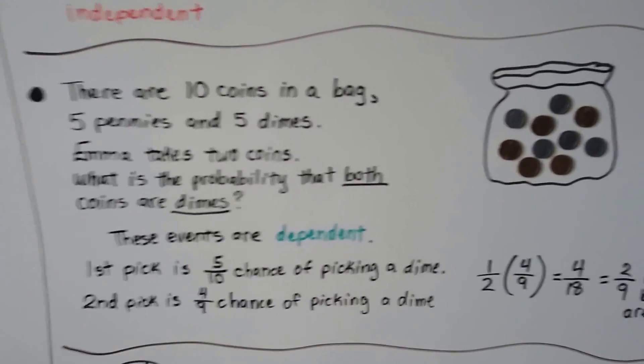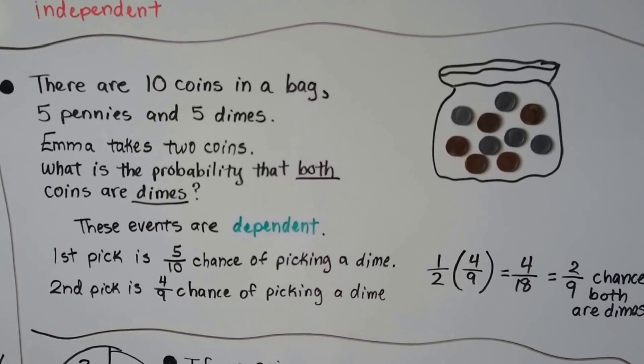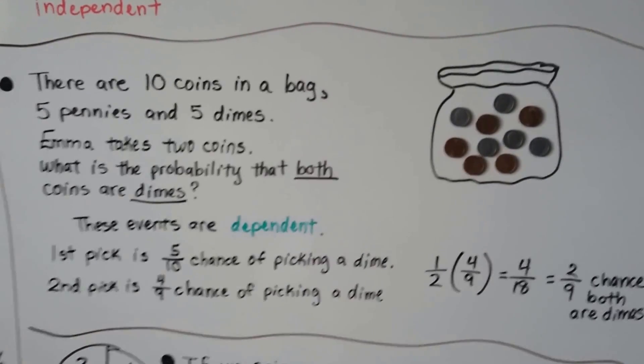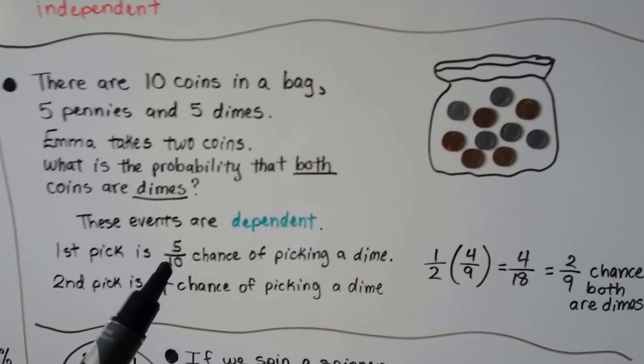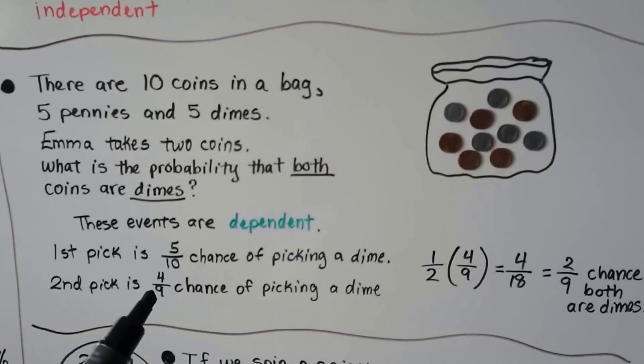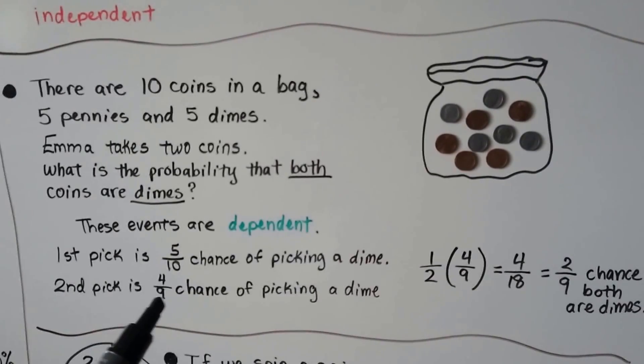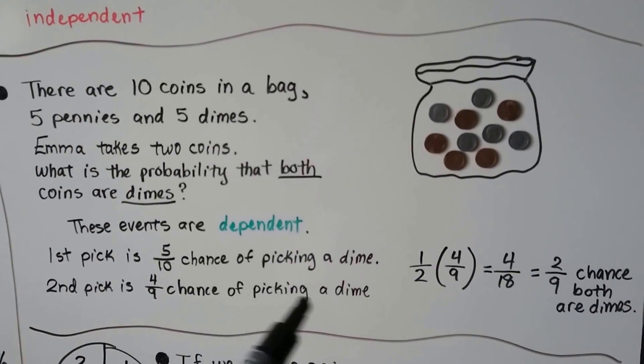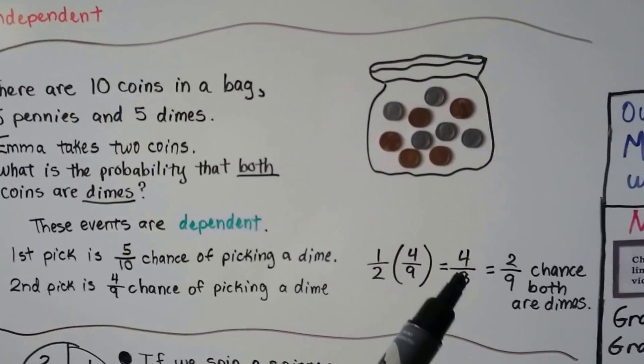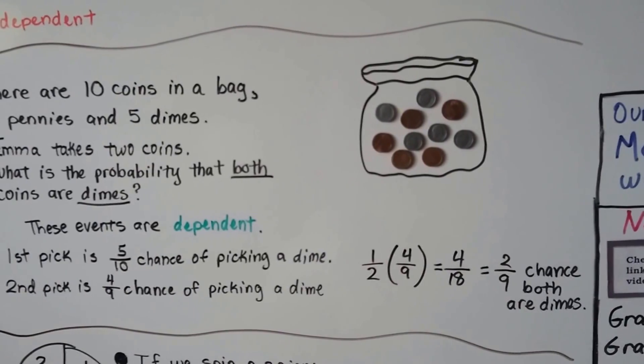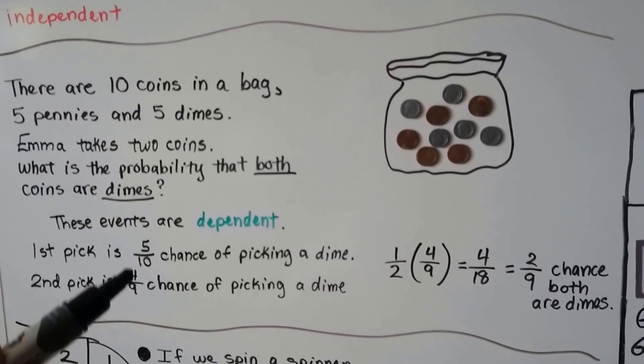Alright, now there's ten coins in a bag. There's five pennies and five dimes. If Emma takes two coins, she takes one and then she takes another, what is the probability that both coins are dimes? Well, these are dependent. Because her first pick, she's got a five-tenths chance of picking a dime. There's five dimes, there's ten coins, she's got a five-tenths chance. That's a half. The second pick, if she did take a dime, well, there's not five dimes anymore. There's four dimes. So now, there's nine coins. She's got a four out of nine chance, a four-ninths chance of picking a dime. We multiply the one-half times the four-ninths, because that reduced to one-half, and we get four-eighteenths, and we can reduce that to two-ninths chance that both will be dimes. It was dependent because the second one had a different amount of coins and a different amount of dimes.